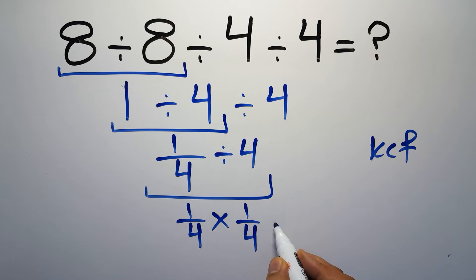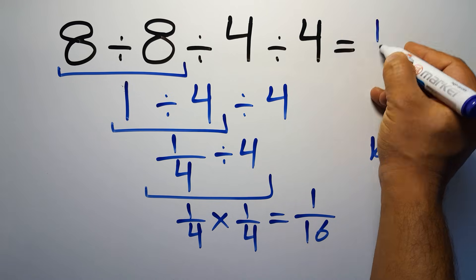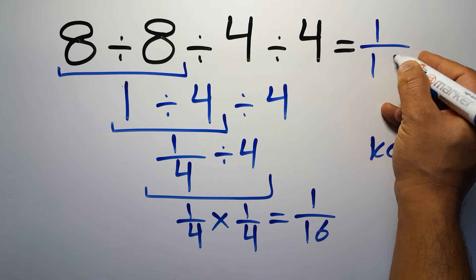Which equals: 1 times 1 gives us 1, and 4 times 4 equals 16. So 1 over 16. And this is our final answer to this problem. The correct answer is 1 over 16.